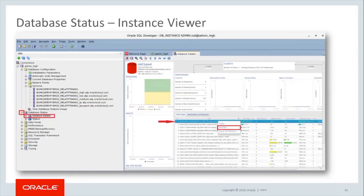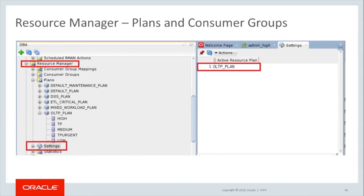To get detailed information about workloads and performance, under Database Status, select Instance Viewer. This section shows top SQL usage, memory and storage usage, processing running, sessions, and other important information about the current workload on the database. To view which is the active resource plan on the instance — for example, to determine whether this is an ADW or an ATP instance — select the Settings option under Resource Manager. In this case, the active resource plan is OLTP plan, indicating it is an autonomous transaction processing instance.